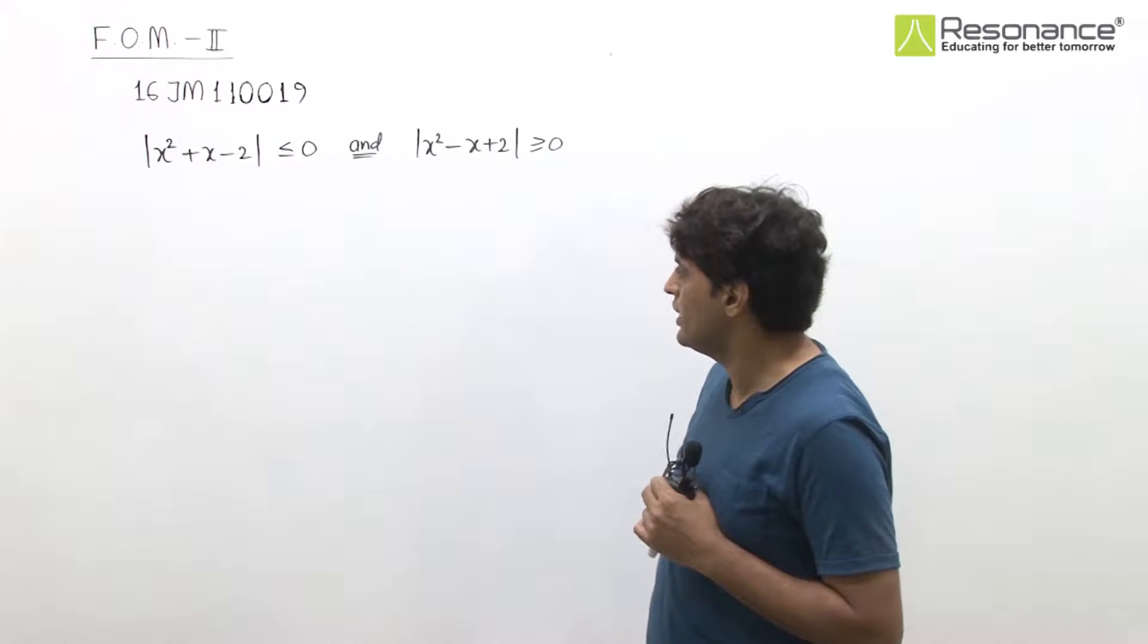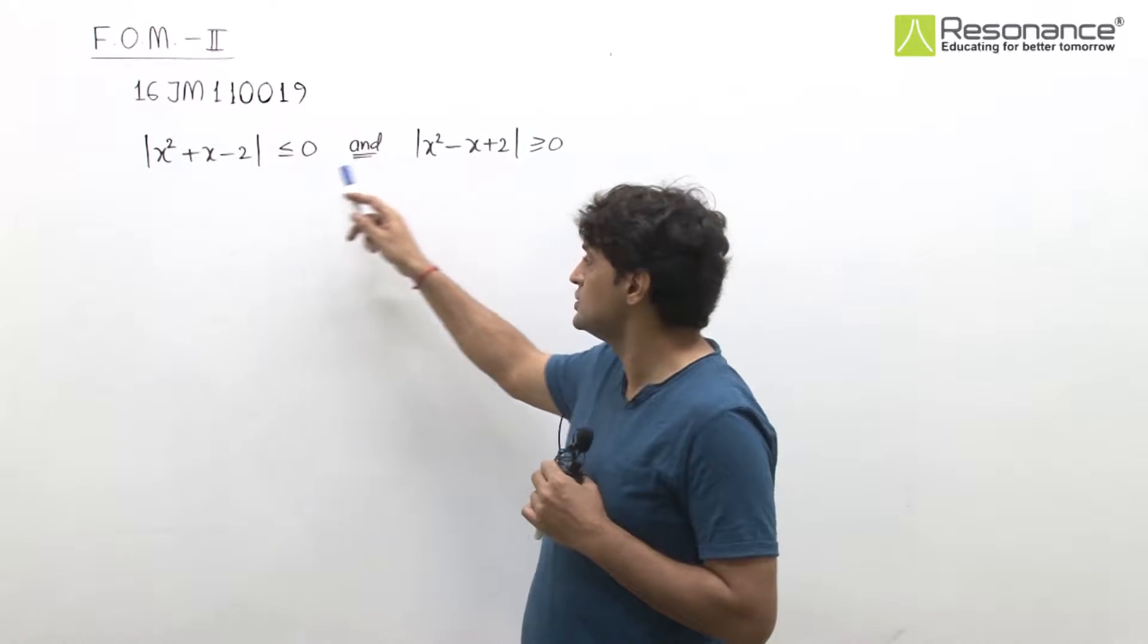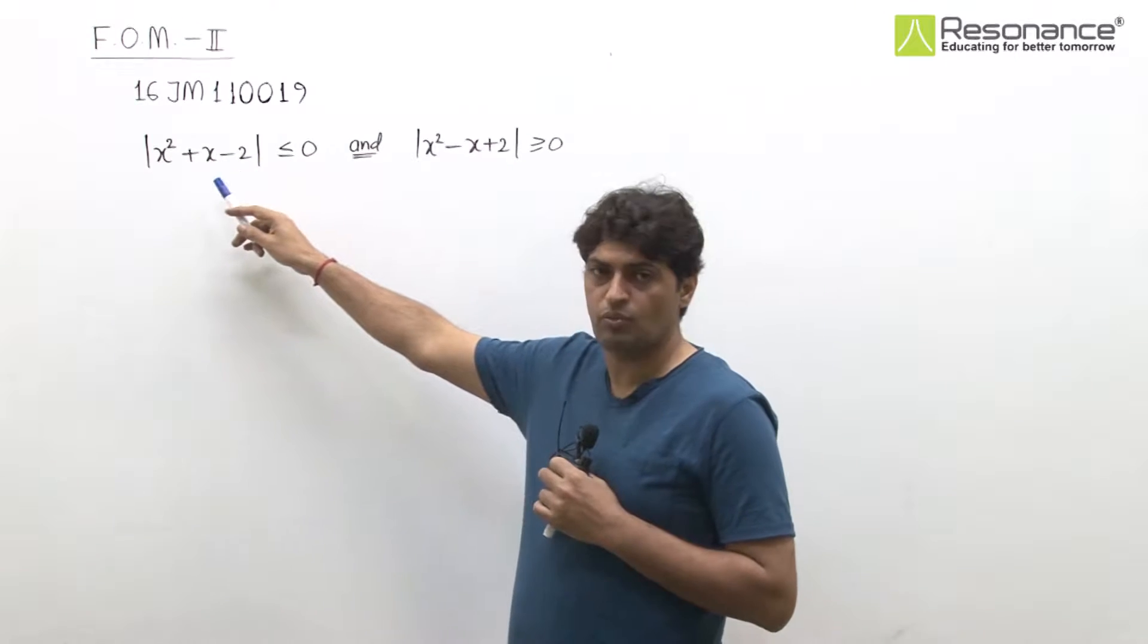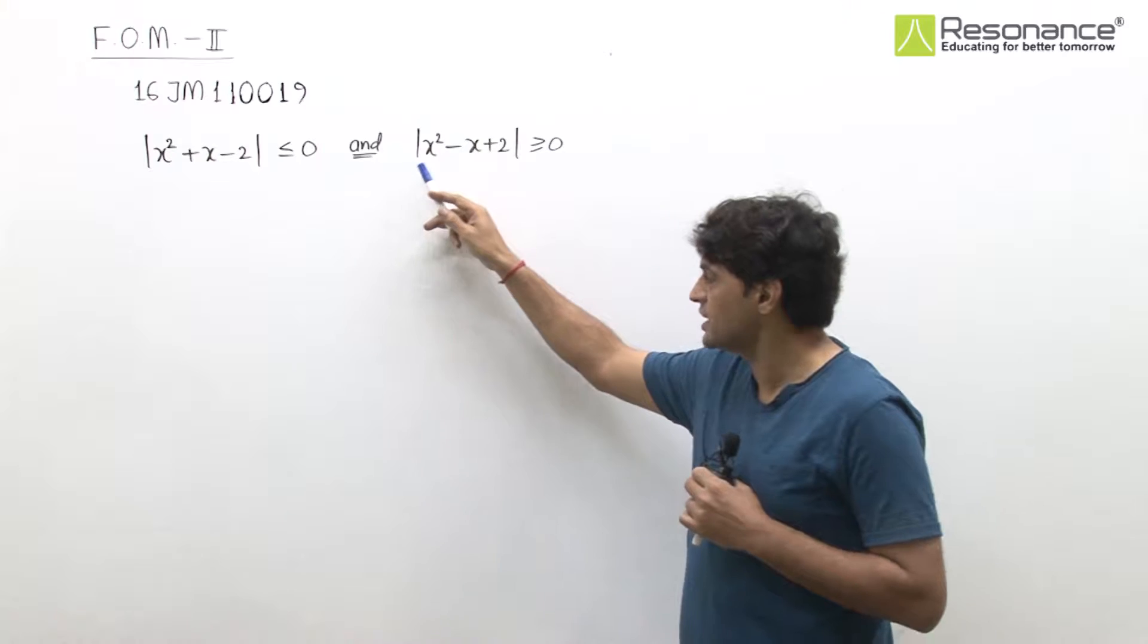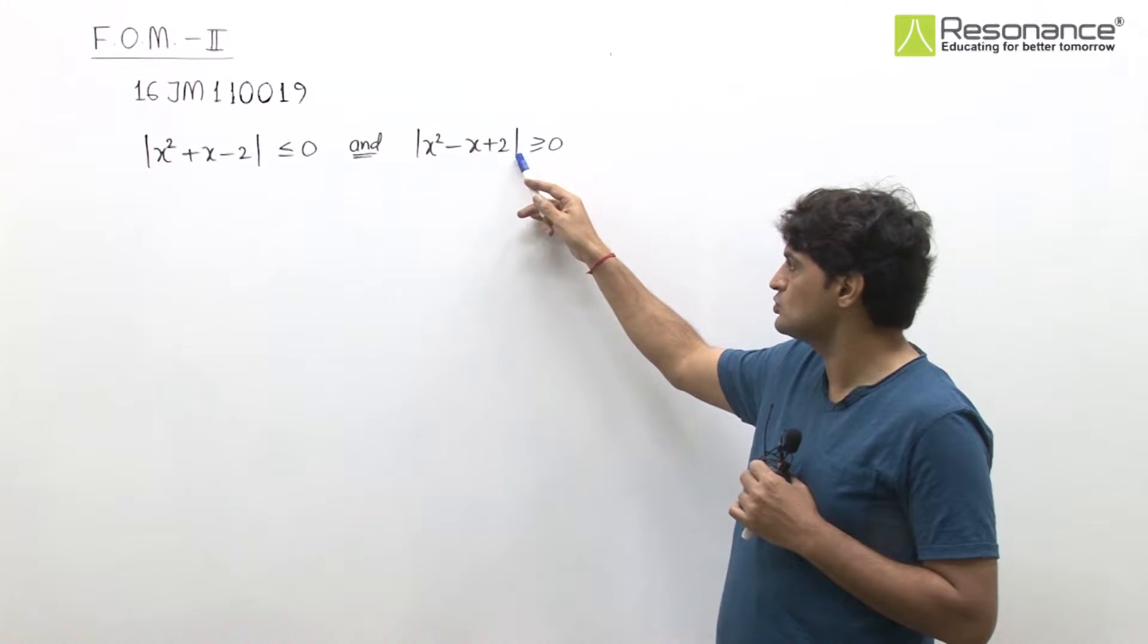In this question, we have to find the values of x satisfying these two inequalities. First one is mod of x square plus x minus 2 less than or equal to 0, and second one is mod of x square minus x plus 2 greater or equal to 0.